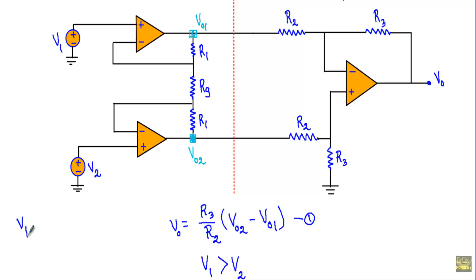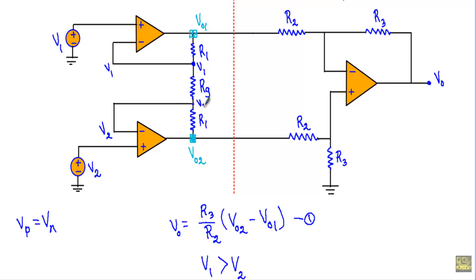When an operational amplifier is in negative feedback, its inverting terminal voltage and non-inverting terminal voltage will be equal — that means Vp will equal Vn. The voltage at this non-inverting terminal is V2, therefore the voltage at the inverting terminal will also be V2. The non-inverting terminal voltage of the other op-amp is V1, so the voltage at that inverting terminal will be V1. Since the op-amps are in negative feedback, the input terminal currents will be zero.